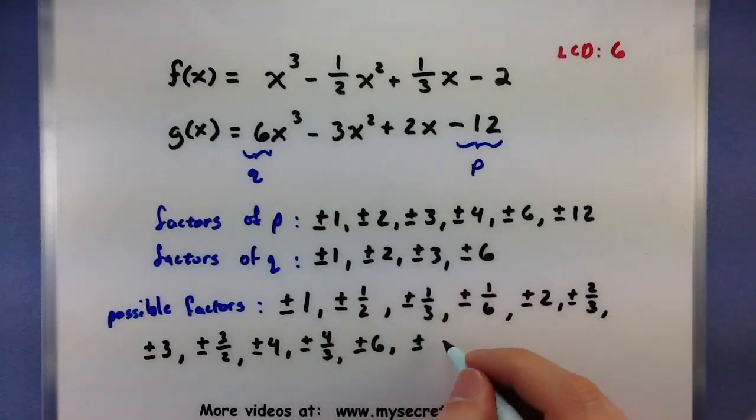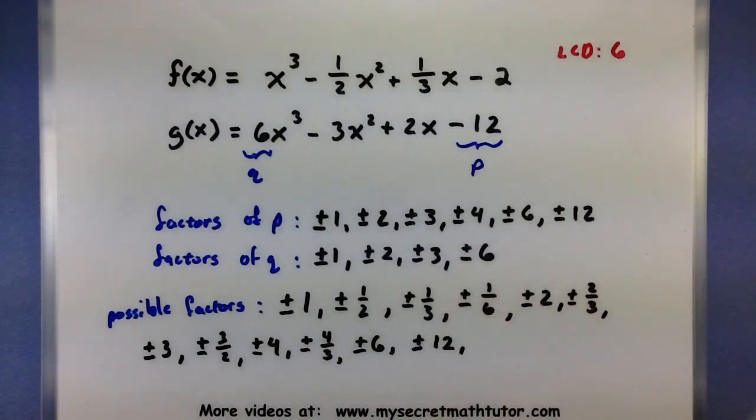On to the 12. 12 over 1. 12 over 2 is 6, I have it. 12 over 3 is 4, I have that one. And 12 over 6 is 2, I have that one. So 2, 4, 6, 8, 10, 12, 14, 16, 18, 20, 22, 24. So there are 24 possible factors that I could then start testing out. Alright. So that's how you use the rational roots theorem for polynomials.